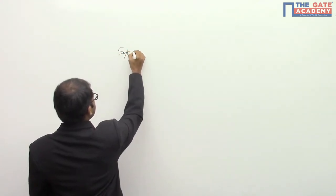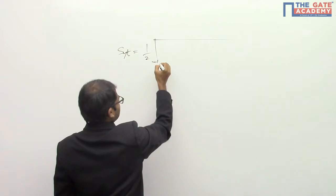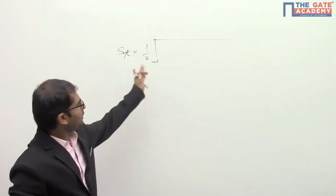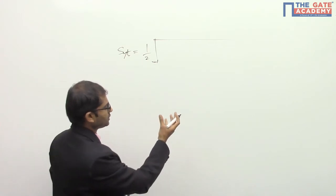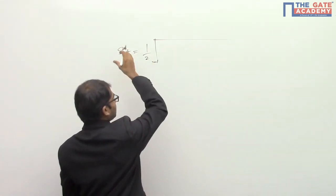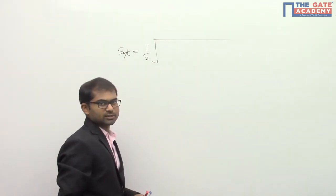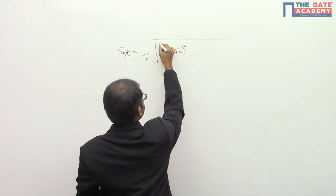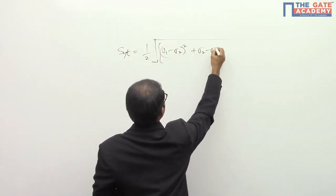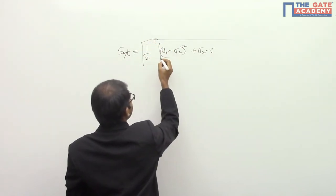For that loading case, the distortion energy formula is given like this. Syt is equal to... It is not the distortion energy formula, in fact, but the relation which we get by equating distortion energy of uniaxial loading case on the left side with distortion energy of our loading case. So we will be getting it as (sigma_1 - sigma_2)² plus (sigma_2 - sigma_3)².